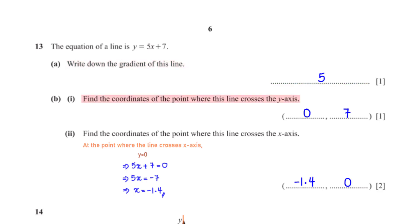Find the coordinate of the point where this line crosses the y-axis. At the point where the line crosses the y-axis, the x-coordinate is 0. Substituting x = 0 into the equation gives y = 7, so the coordinate is (0, 7).